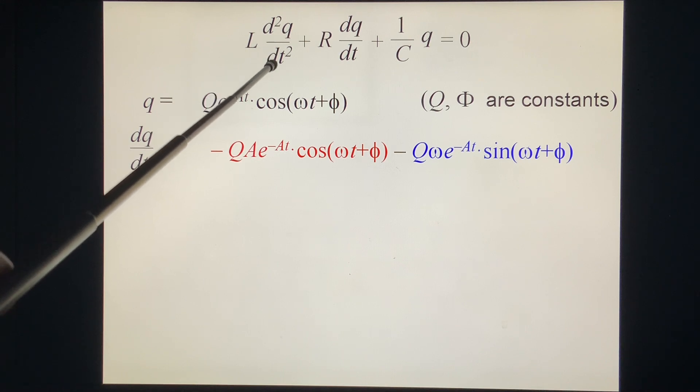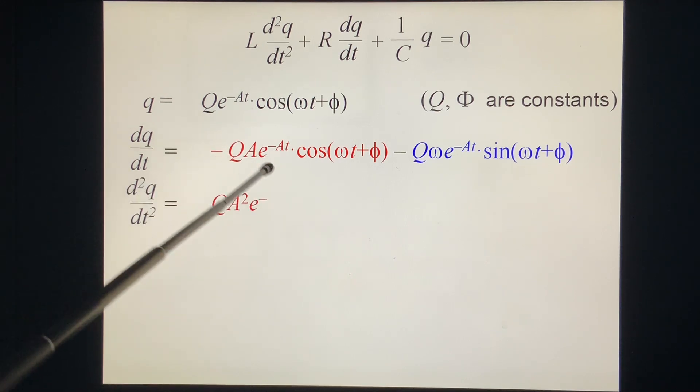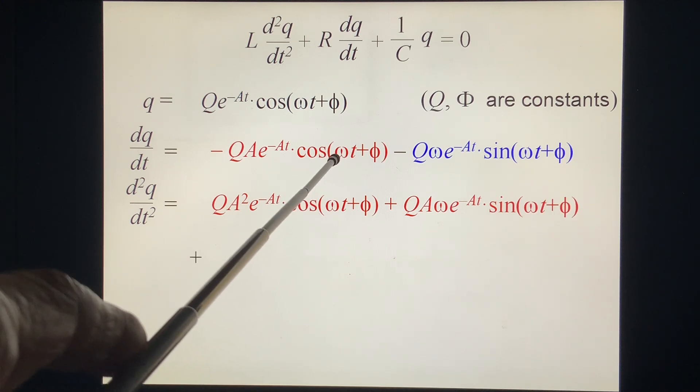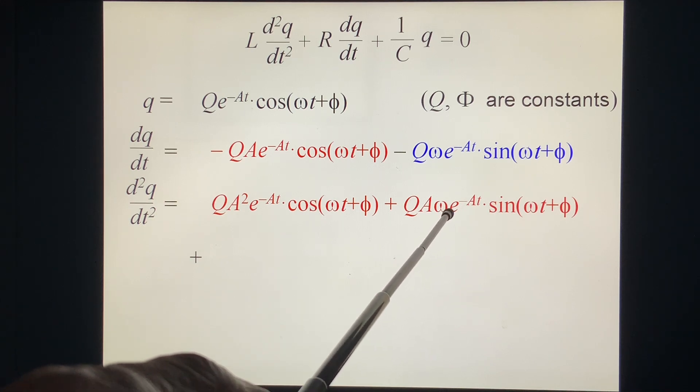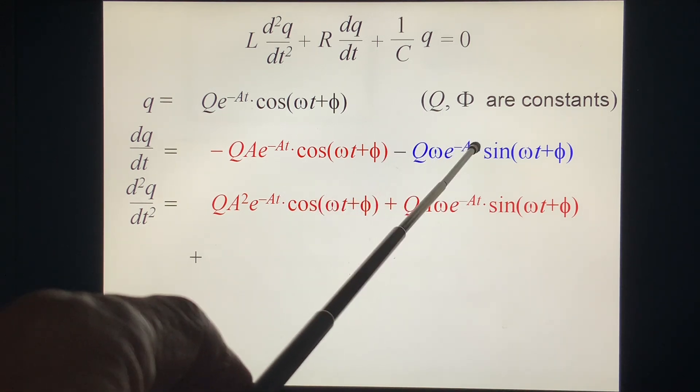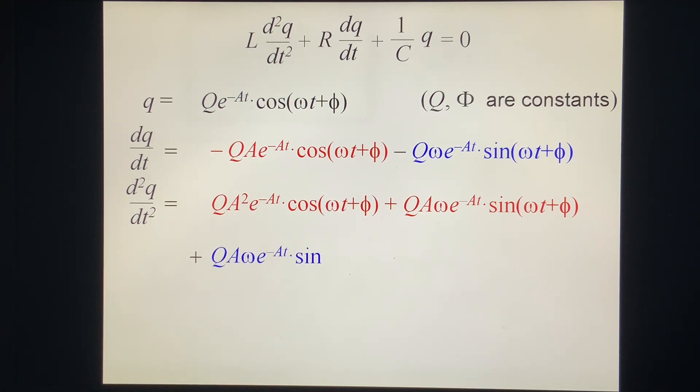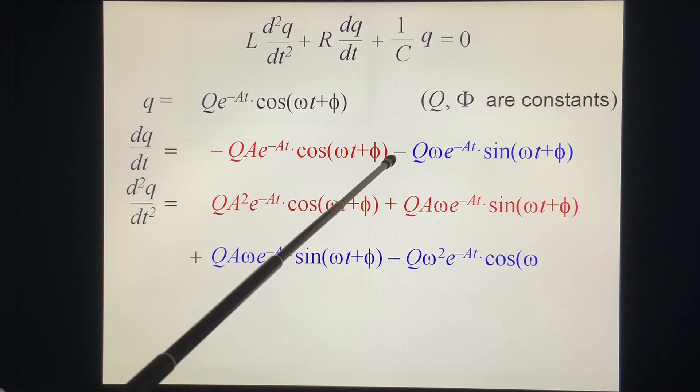We do the second derivative with respect to time t. We do these two terms. The first term you have minus a again, so positive Qa²e^(-at)cos(ωt+φ). Second, you have cosine, you have a minus sine ω, minus minus positive sine ω, you have ω. Now look at this one, this derivative is minus a, so you get positive QAωe^(-at)sin(ωt+φ). And then you do this sine, sine is cosine, you have ω, ω squared, minus Qω²e^(-at)cos(ωt+φ). So you have these four terms.